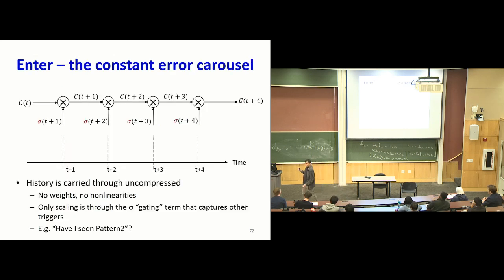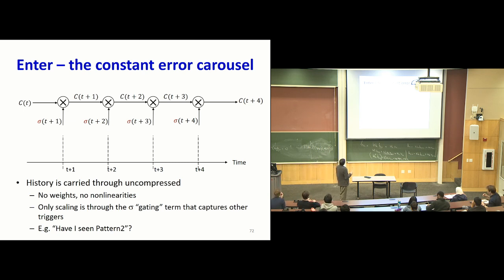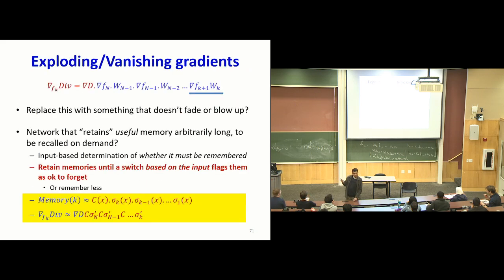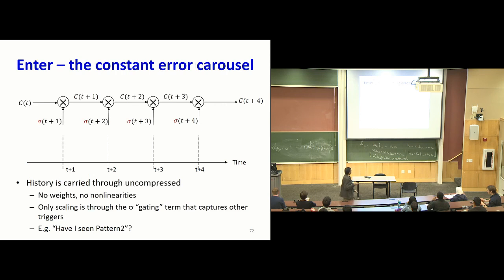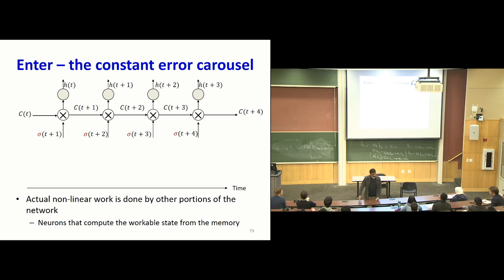What you really want is a structure where some information is extracted from the input, and subsequently, whether you remember it or not is based on switches — at each time you ask: have I seen something telling me this input is no longer useful? If not, keep it. So: I've opened a curly brace, I look at the current input — am I closing it? No — retain the memory. Now? No — retain. Now? Yes — forget it. That's the kind of behavior you want.